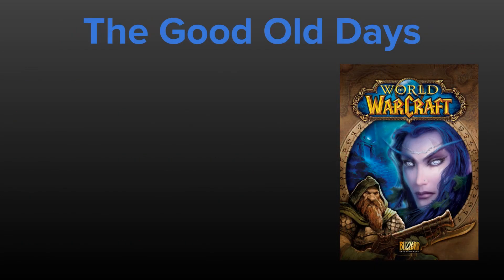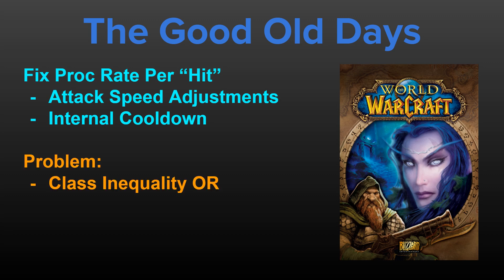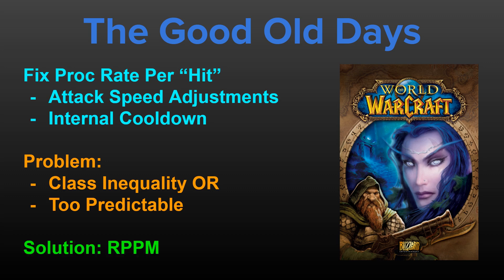Back in the good old days, proc effects generally functioned off of a fixed proc rate system, with or without attack speed adjustments or internal cooldowns. Too much focus on fixed proc rates could disproportionately benefit classes that had more hits per second, while too much focus on internal cooldowns could make these procs overly predictable. The RPPM system managed to produce a relatively standardized proc rate between multiple classes and specializations that still occurs in a mostly randomized fashion.